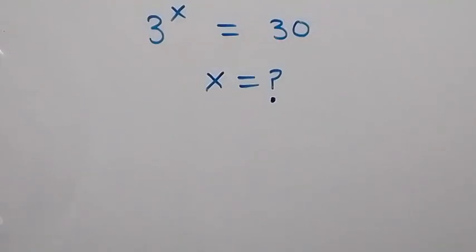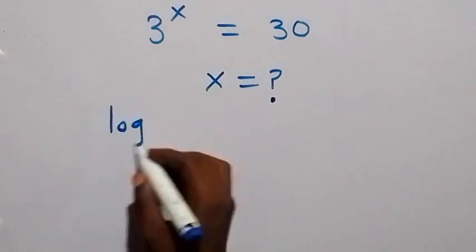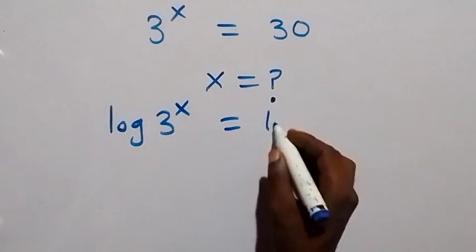Hello, you are welcome. To solve this nice exponent problem: 3 raised to power x equals 30. Here we can take the log on both sides. We have log 3 raised to power x, then equals to log 30.